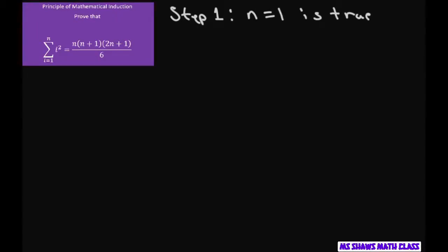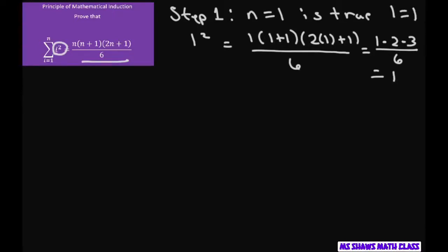So just plug in 1 here, you get 1 squared equals and then plug 1 into that. So put 1, 1 plus 1, and 2 times 1 plus 1. And that's divided by 6. So this is going to be 1 times 2 times 3 divided by 6. And that equals 1. So we have 1 equals 1. So our step 1 is true.